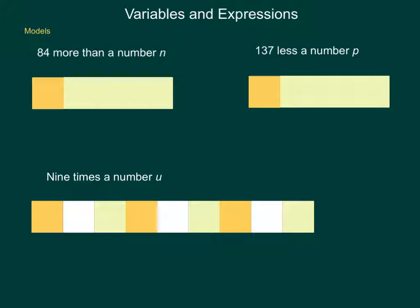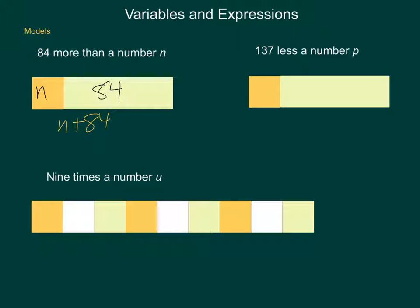Now, how do we use models and English sentences to denote different forms of algebraic expressions? If we start out with the sentence '84 more than a number N,' we can mark up the representation for different items. If I call the small part N and the large part 84, placing these together gives us N plus 84, or we could also say 84 plus N. The phrase 'more than' interprets as addition.